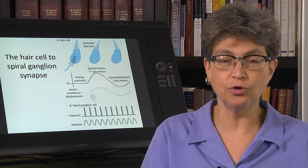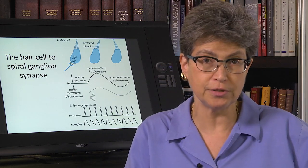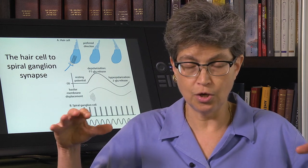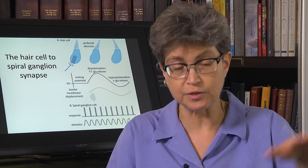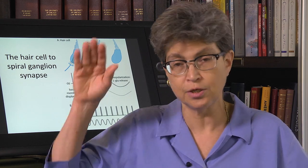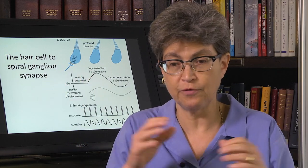So these are ototoxic drugs. In general, the drugs that kill cochlear hair cells, and the drugs that kill vestibular hair cells are distinct with some that kill both. They have preferences. One is more prefers to kill cochlear hair cells. One may prefer to kill vestibular hair cells, and a few kill both.